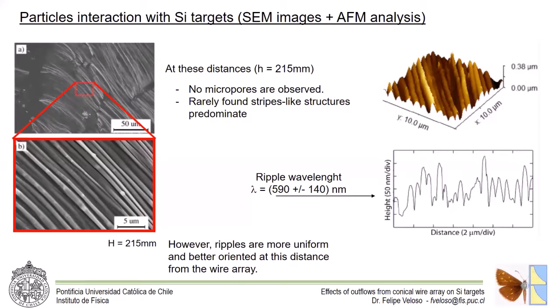Taking a further analysis of the silicon target located at 21 centimeters above the top electrode, we can see that no micropores are observed in this position and also predominate stripe-like structures which can be rarely found, rarely produced in typical material science experiments. Using atomic force microscopy analysis, we can see that the wavelength of these ripples is close to 590 nanometers and as far as the target is located, these ripples are more uniform and better oriented.